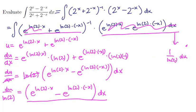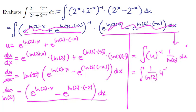The other expression can just be replaced by a u, so you have u to the minus 1, and this entire thing just becomes the integral of 1 over ln of 2 times u to the minus 1 du.